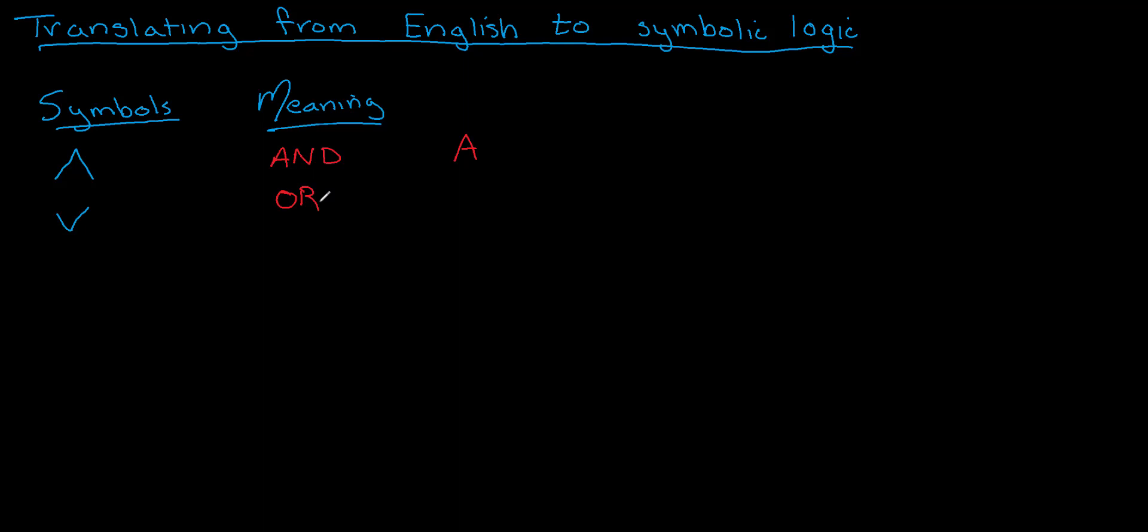Next, we're going to look at an arrow, pointing to the right. It's not a double arrow, just one arrow, and this is our symbol for a conditional statement—an if-then statement. We'll see an example of that in a minute. Now, the double arrow means a conditional in both ways, so this is a biconditional. It's like an if-then statement going both ways, and we call this if and only if.